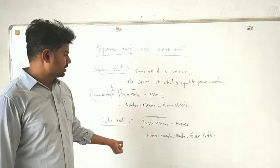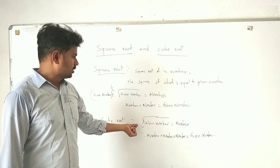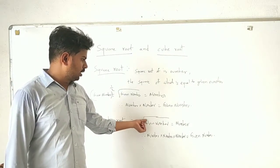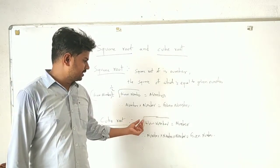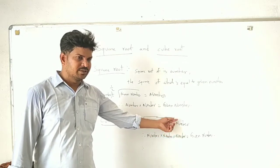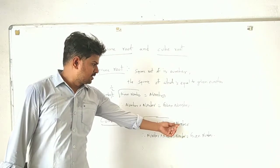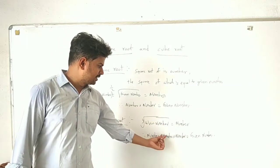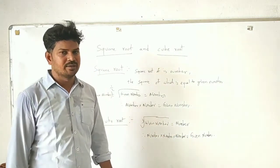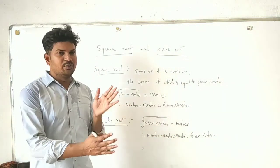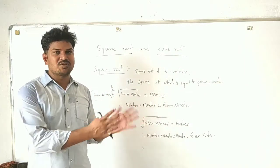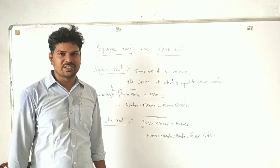Similarly, cube root is: the cube root of a given number equals a number such that if you multiply it three times — number times number times number — you get that given number. So, finding a square root is the reverse process of finding squares. If a number is given, it is easy to find its square. But if a square is given, it is very difficult to find the square root.